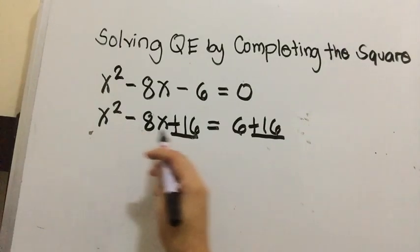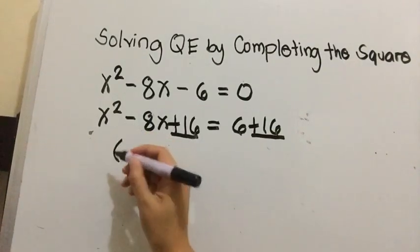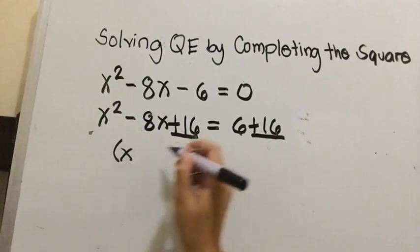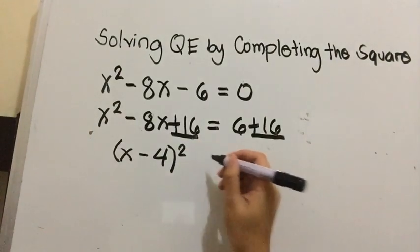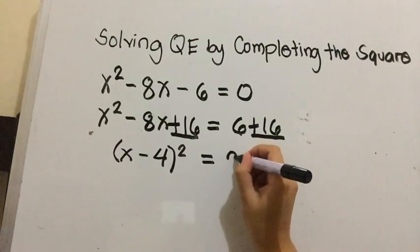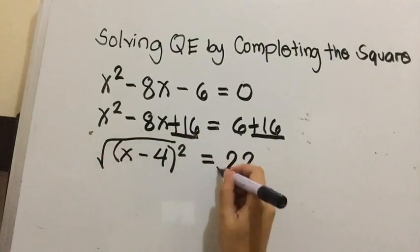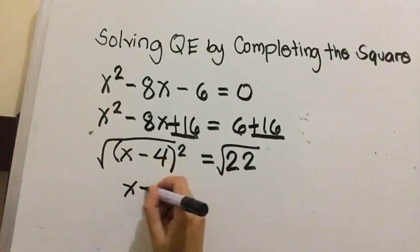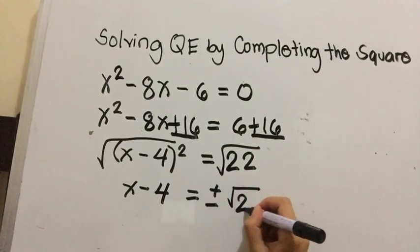Get the square root of the binomial so we can factor this perfect square trinomial. The square root of x squared is x, minus the square root of 16 is 4, then squared, equals 6 plus 16 is 22. We can solve this now by extracting the roots. Get the square root of both sides, so we're going to have x minus 4 equals positive and negative square root of 22, since 22 is not a perfect square.